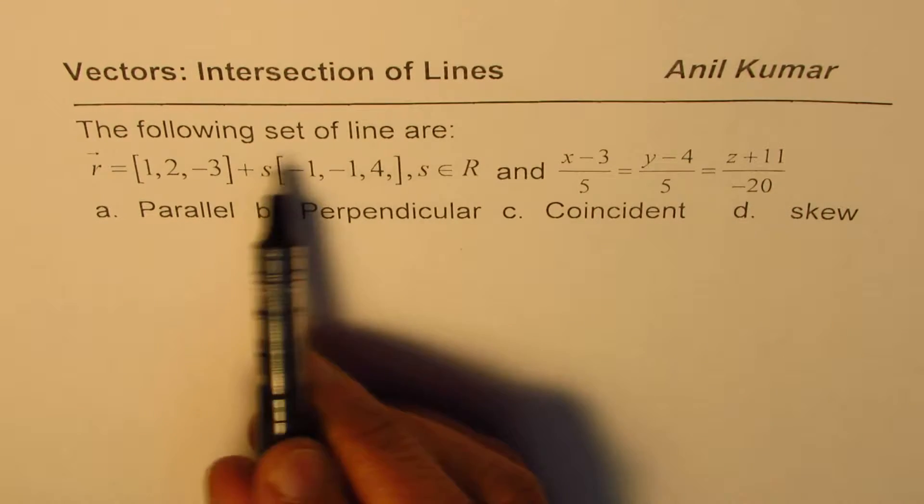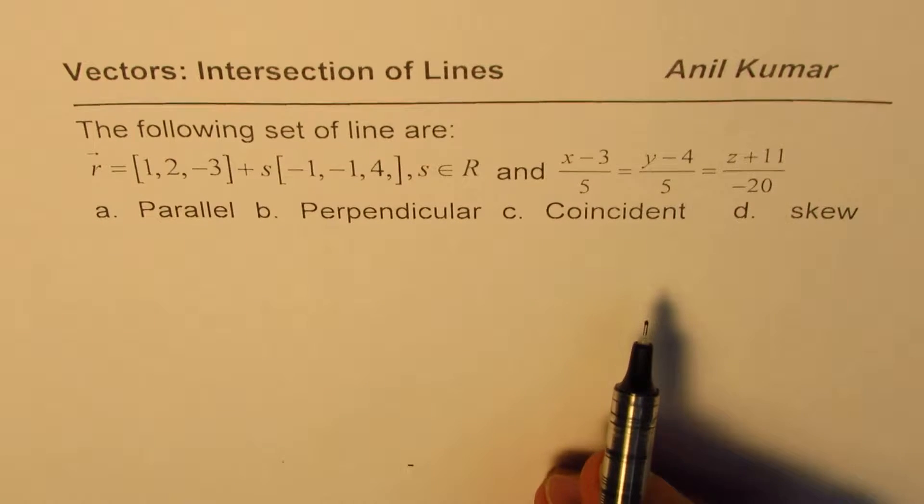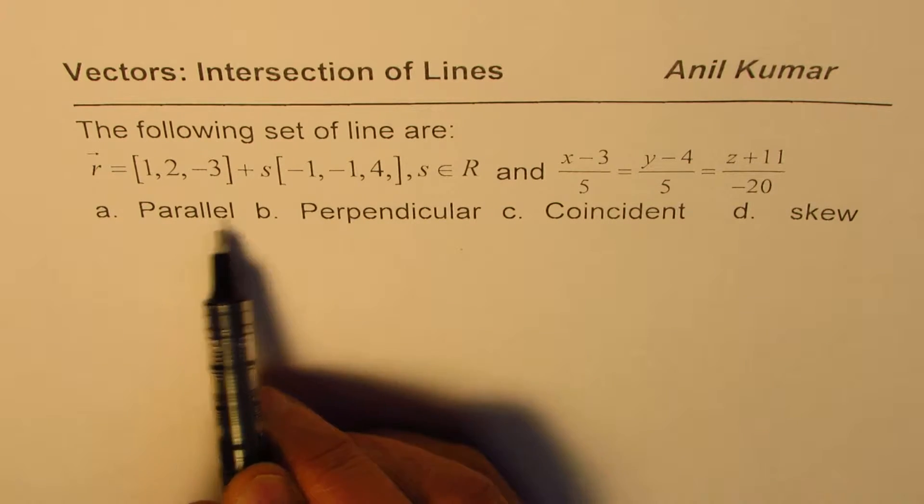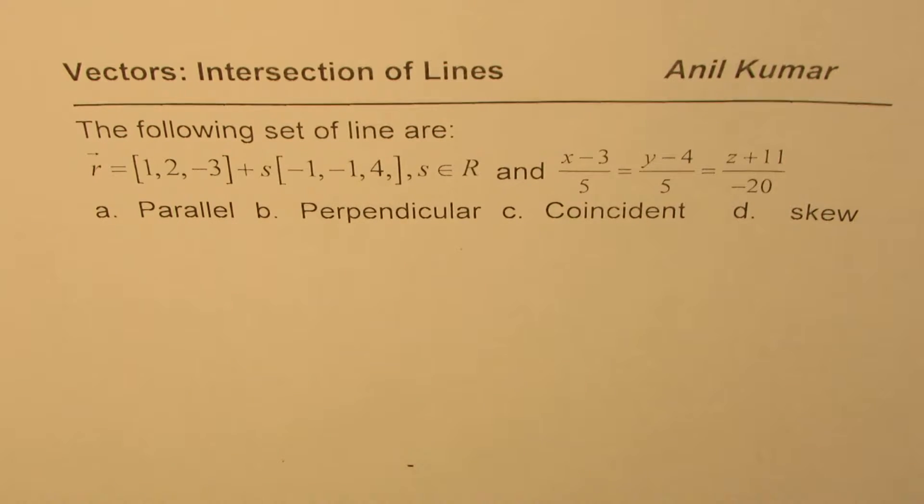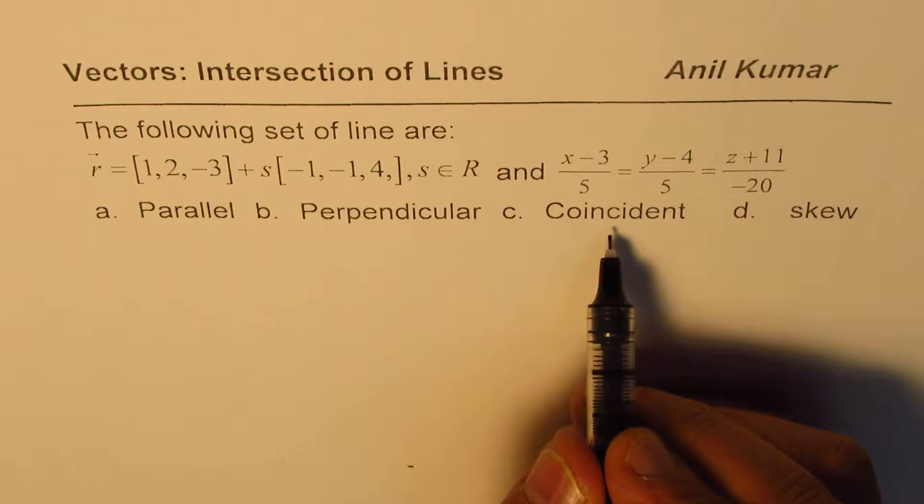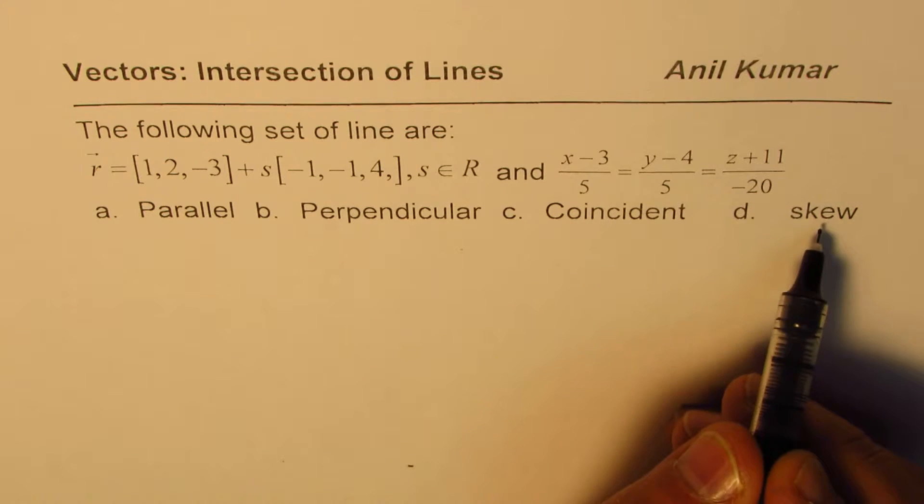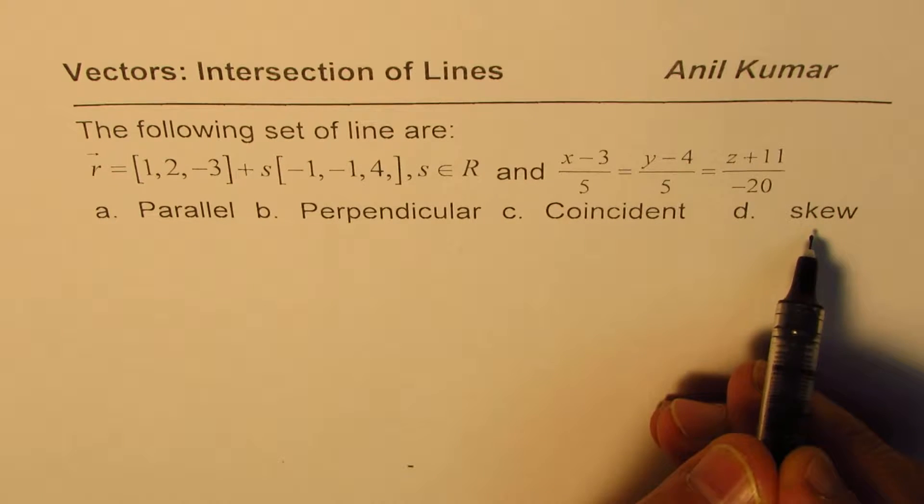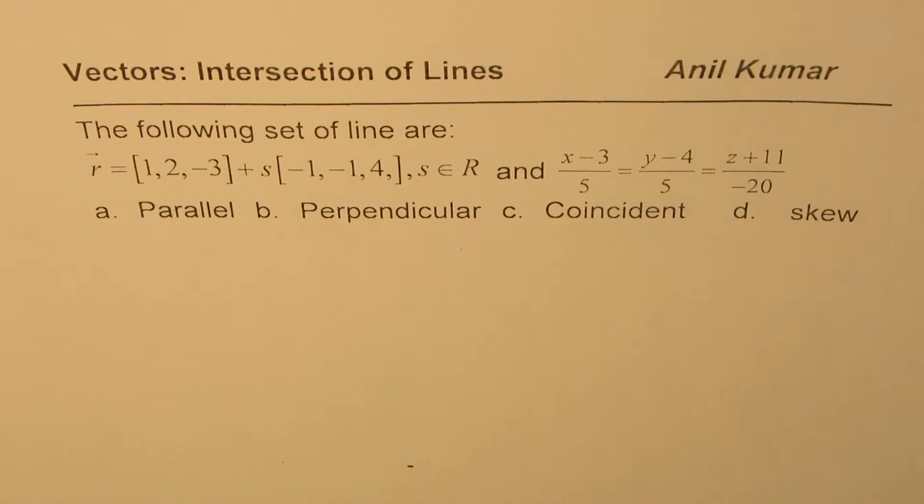We want to figure out if these lines are parallel, perpendicular, coincident, or skew. Parallel lines have the same direction vector and never intersect. Perpendicular lines have direction vectors perpendicular to one another with dot product zero. Coincident lines have infinite points of intersection, they are exactly the same lines. Skew lines do not intersect not because they are parallel, but because they are in parallel planes.